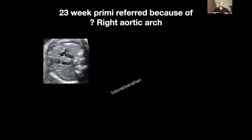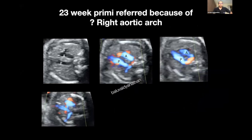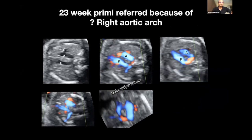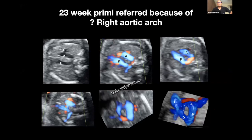In another case, it looks like a right arch at first — you see the U and all that. But then when we looked more carefully, we saw this additional structure, and it turned out to be a double arch. So here we have the trachea, the aorta, a right arch, and also a left arch. A double aortic arch is a complete vascular ring.